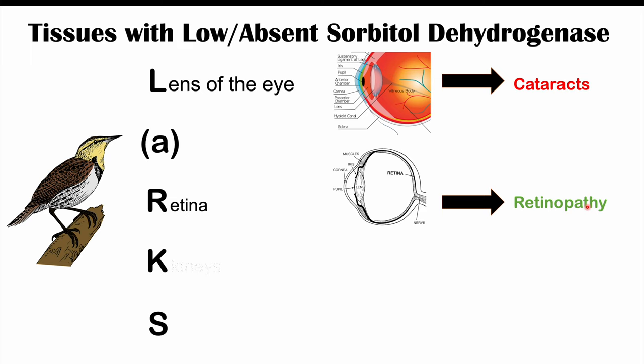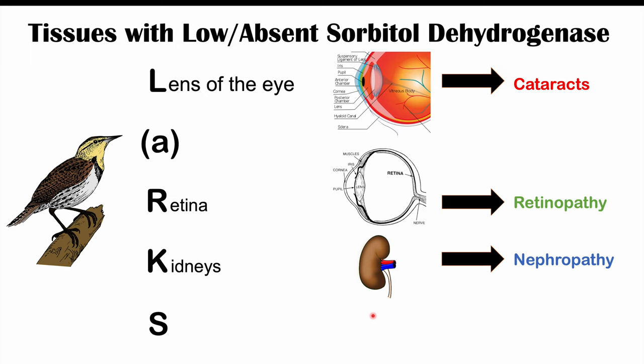The K stands for kidneys. The kidneys also have very low or absent sorbitol dehydrogenase, so sorbitol builds up, causing osmotic effects and damage to kidney tissue, leading to nephropathy or reduced kidney function — referred to as diabetic nephropathy in the context of diabetes.